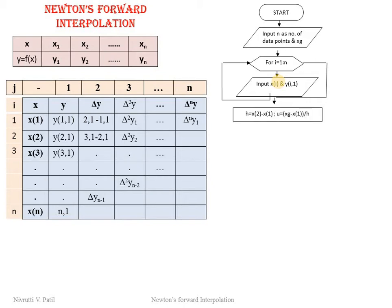Next we calculate the value of h, which is x(2) minus x(1). Then u is calculated as xg minus x(1), divided by h, since the initial value is x(1).